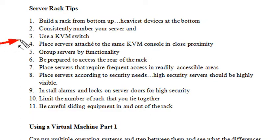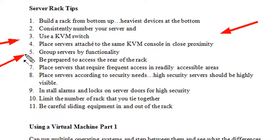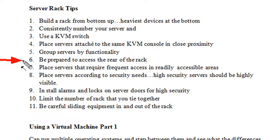Place servers attached to the same KVM console close in proximity. Group servers by functionality so you don't have to walk across the room to work on another server. Be prepared to access the rear of the rack — sometimes racks are placed against the wall, and it can be quite a pain, especially when you need to access the back quickly to replace a power supply, for example.